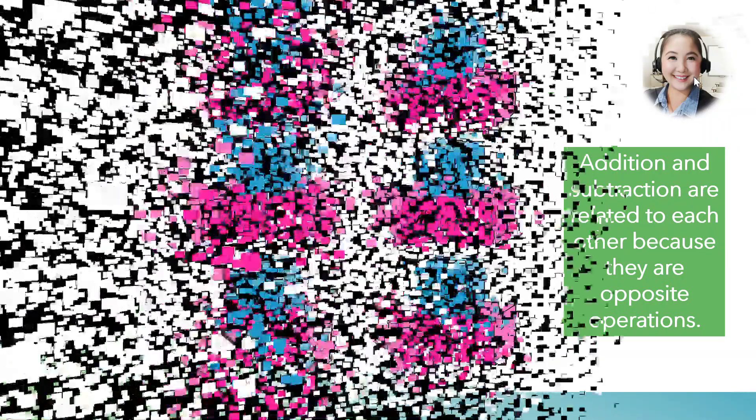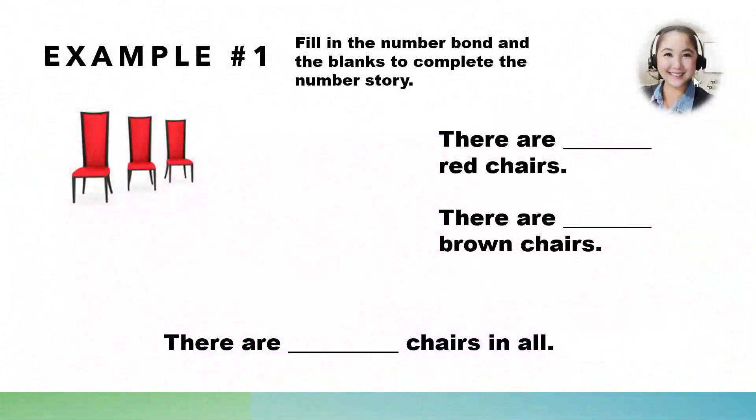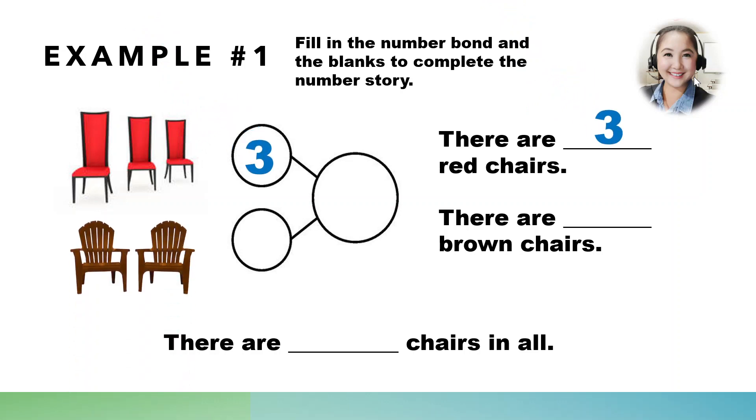Okay, children, I think you are now ready to create your own number bonds stories. Are you ready to make your own stories? Okay, but I will be helping you first. Let's have this example. Fill in the number bonds and the blanks to complete the number story. How many red chairs can you see? Great! There are 3 red chairs. What about this? Yes, there are 2 brown chairs. So, how many chairs are there in all? Yay! There are 5! There are 5 chairs in all.